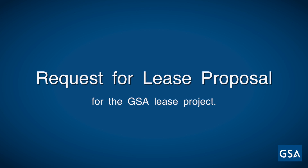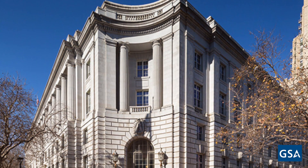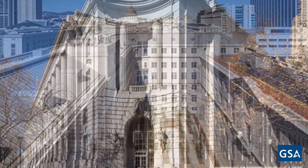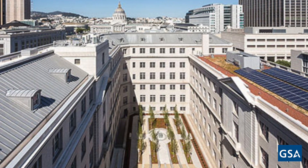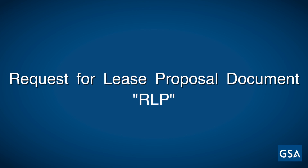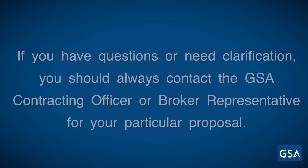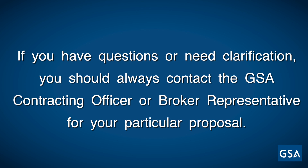In this tutorial, we will explain how to successfully complete a Request for Lease Proposal for a GSA lease project. We will go through the standard GSA forms and additional submittal requirements as outlined in Section 3, How to Offer, the Request for Lease Proposal or RLP. Since each RLP and project is unique, each RLP might be slightly different, so be sure to thoroughly review the specific RLP and items required to make an offer. If you have questions or need clarification, you should always contact the GSA contracting officer.